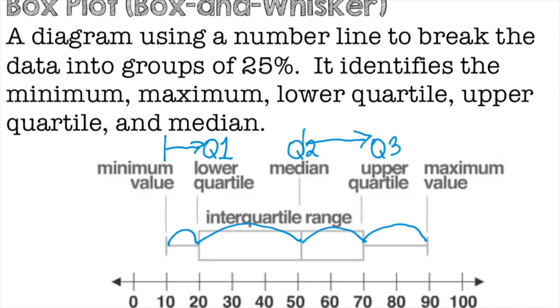In the middle, that's quartile two. From quartile one up to the median, that's quartile two. Quartile four would be from the upper quartile to the maximum value. It's all broken up into fourths.